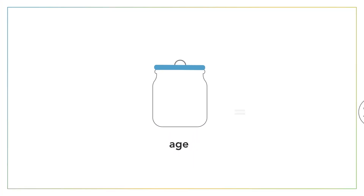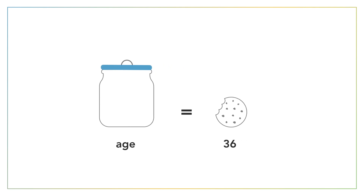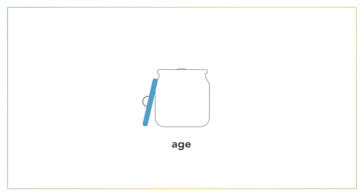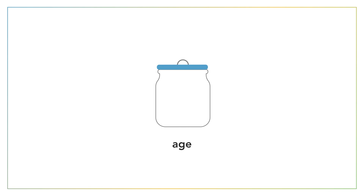Although we're using an equal sign, try not to think of it the same way you did in high school algebra. In programming, the equal sign means: I want to take the value on the right and store it in the variable on the left. It doesn't mean the two sides are equal. That's important to keep in mind.